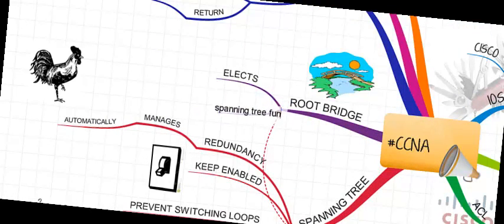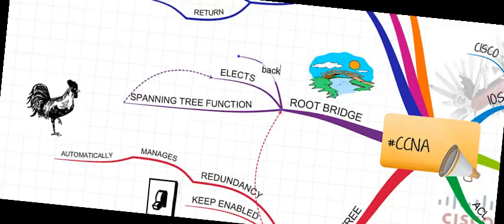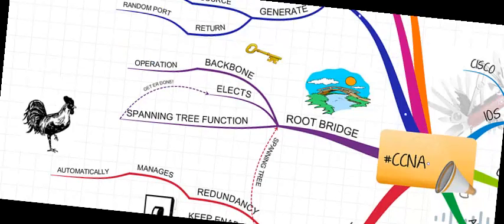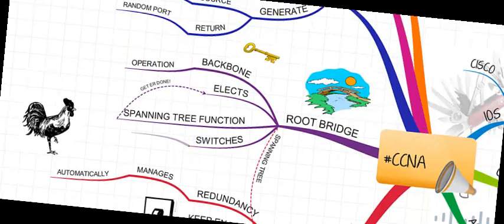In my mind, Spanning tree is synonymous with root bridge. There has to be a root bridge, a backbone, a very robust unit that is the center of the action.